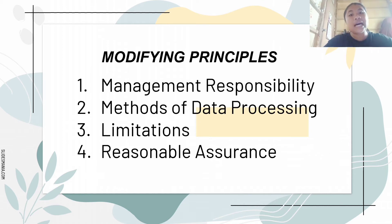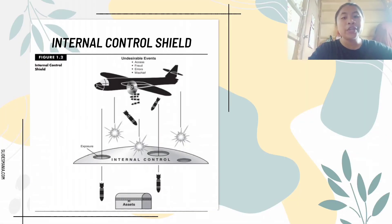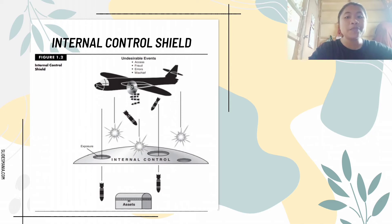Last but not least is the principle of reasonable assurance. The internal control system needs to provide reasonable assurance that the four major internal control objectives are being satisfied. According to this logic, the expense of having better control should not outweigh the benefits.